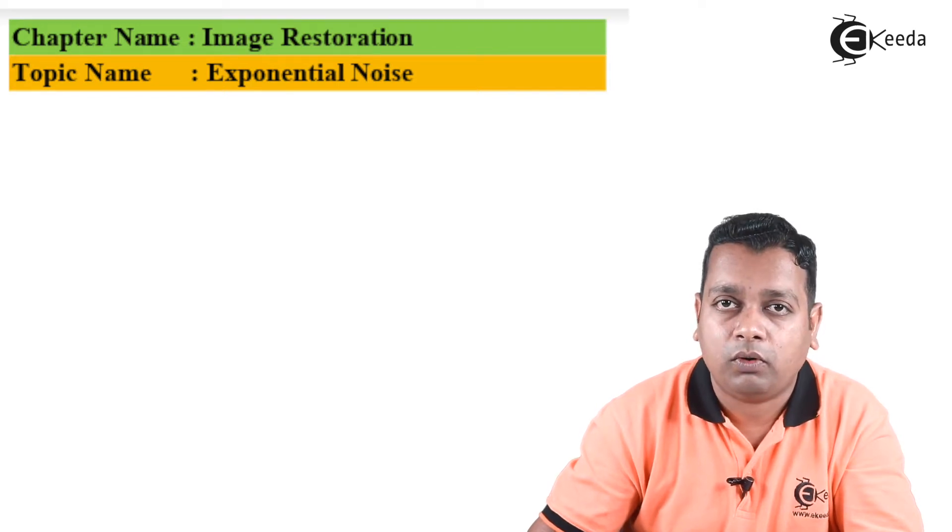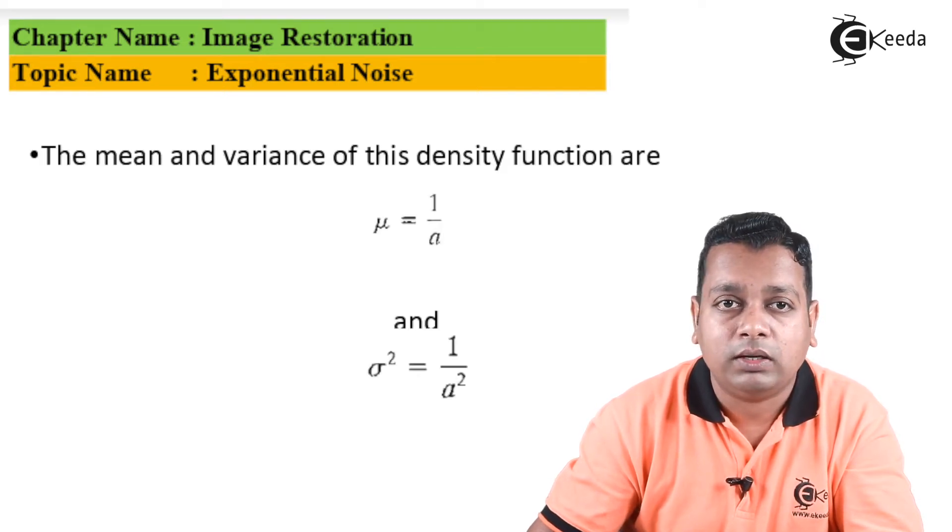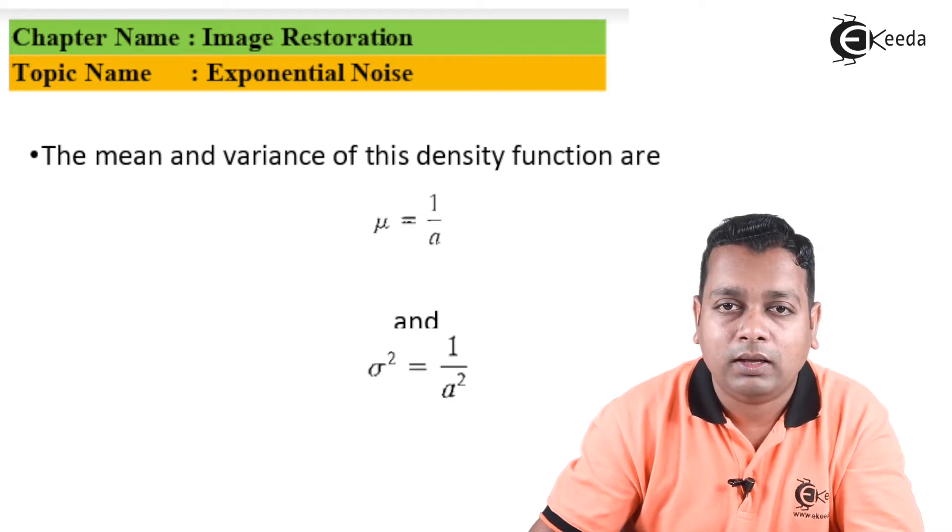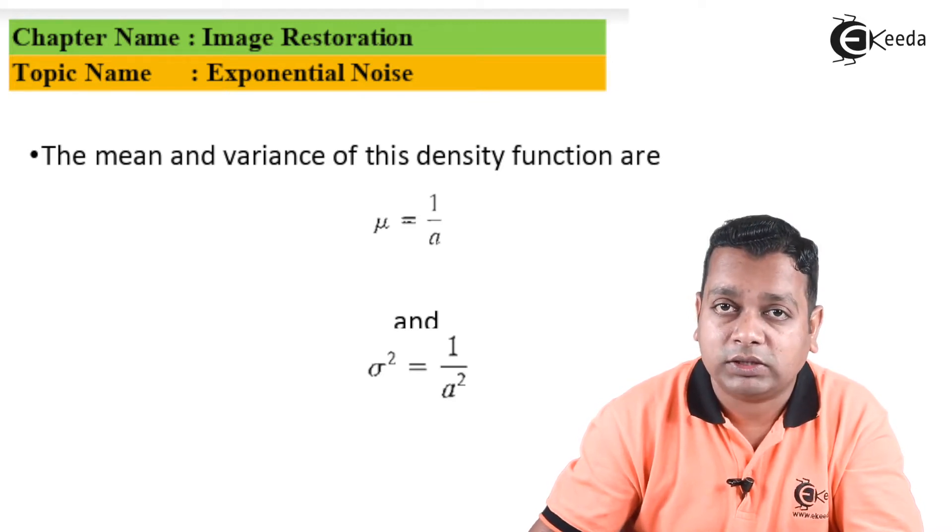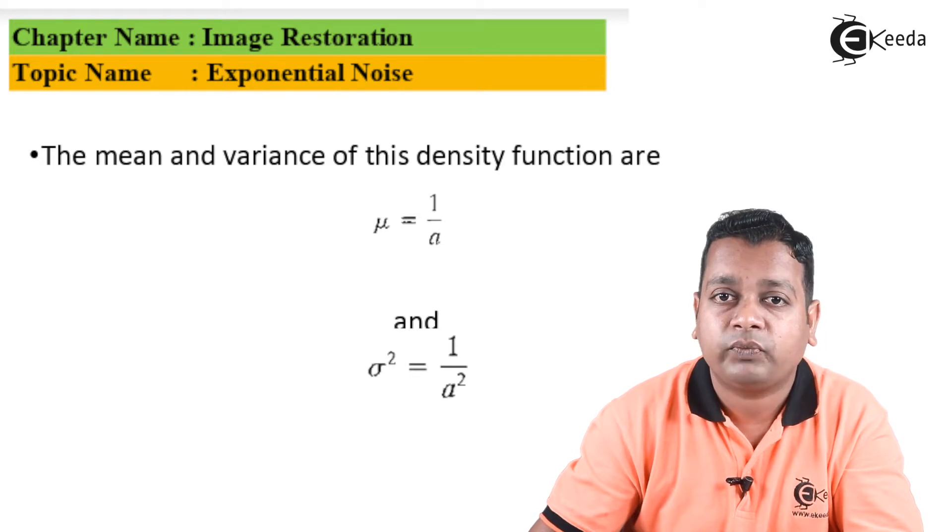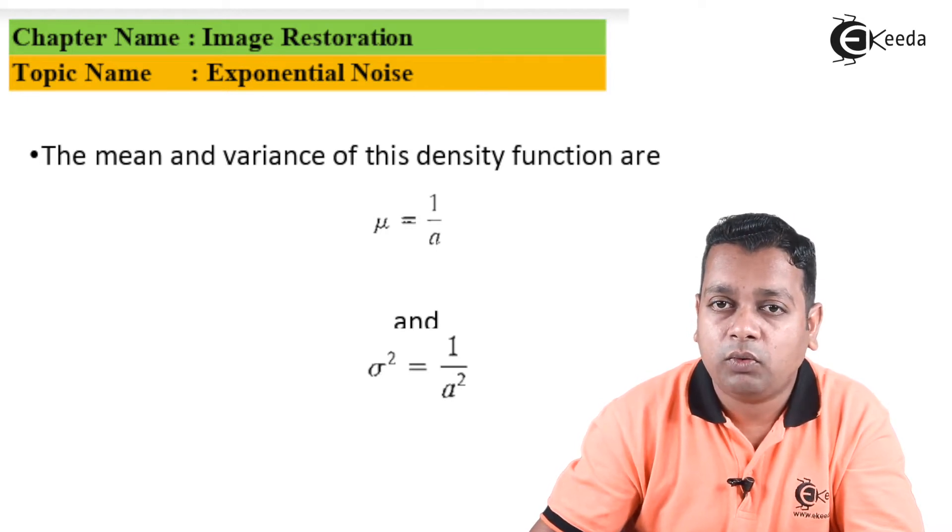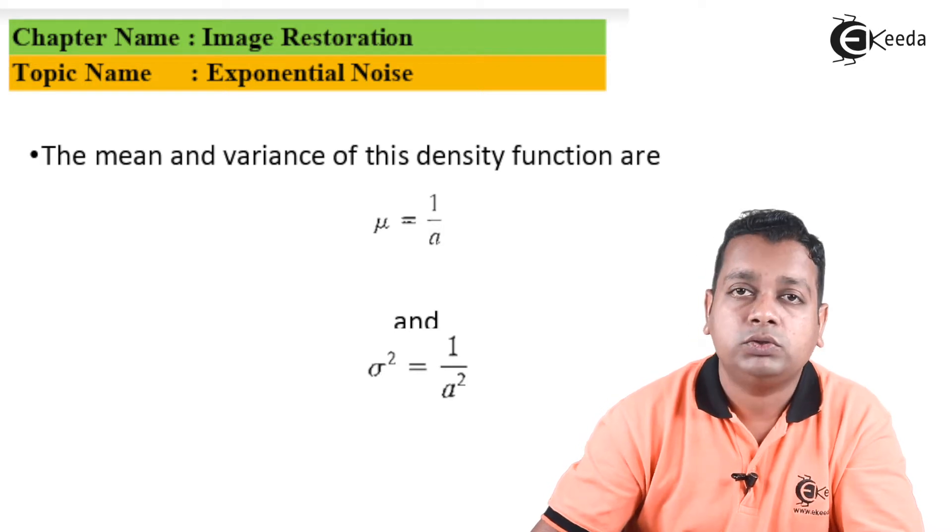Here we have the simple formula for p of z representing the PDF on the left-hand side, given by a in multiplication with the exponential, as the name suggests, e to the power minus a times z, representing the random variable. The condition provided is that z should be greater than or equal to zero.